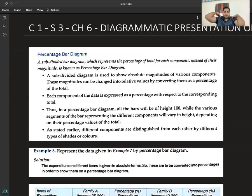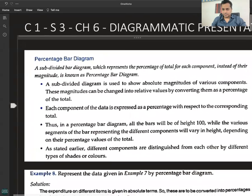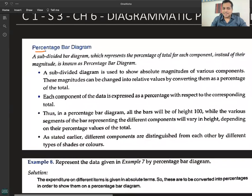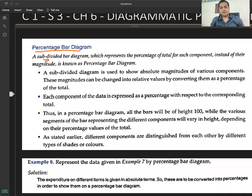Diagrammatic presentation of data. Main one-dimensional diagrams also known as bar diagrams: simple bar diagram, multiple bar diagram, and subdivided bar diagram. Next is the percentage bar diagram, exactly same as subdivided bar diagram but the data is expressed as a percentage.